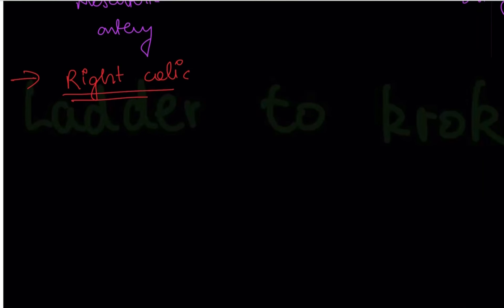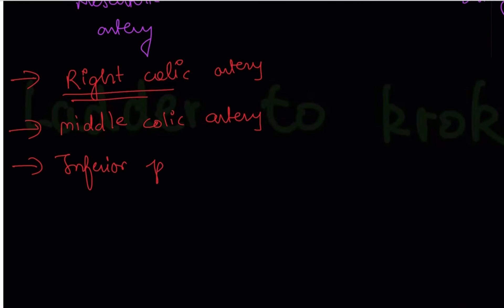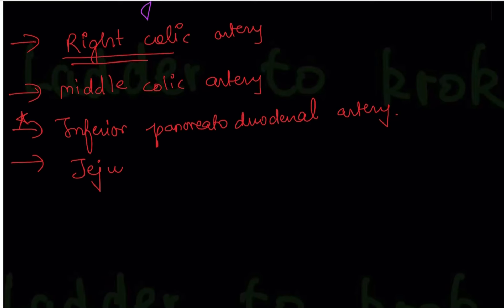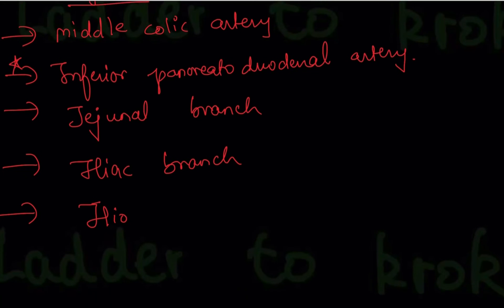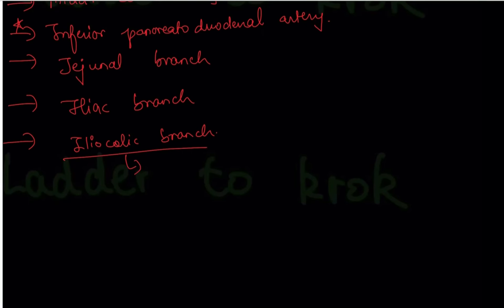The branches of the superior mesenteric artery: right colic artery — supplies the ascending colon; middle colic artery — supplies the transverse colon; inferior pancreaticoduodenal artery — very important, make a star on it; jejunal branch; ileal branch; and the ileocolic branch, which is related to the appendix. In appendectomy, you must ligate the appendicular artery, and the ileocolic branch is also associated with it.